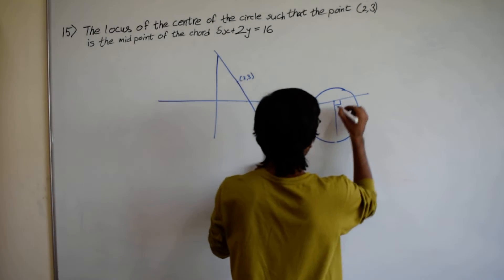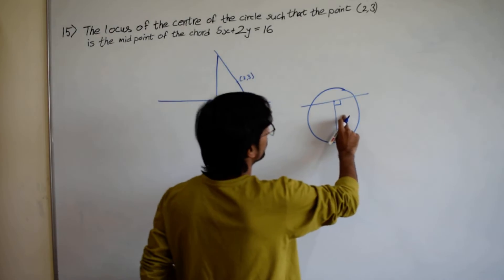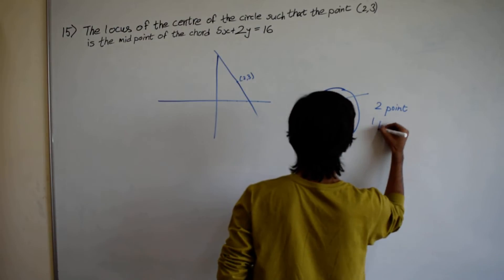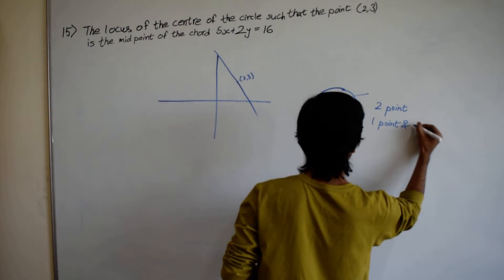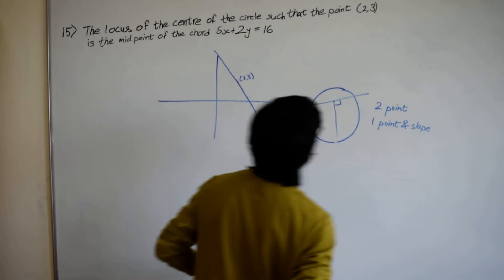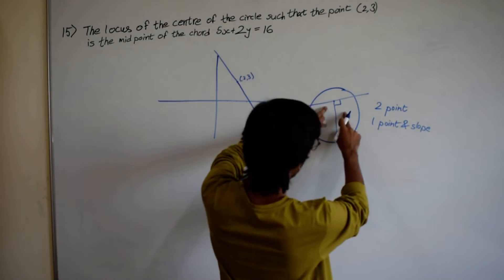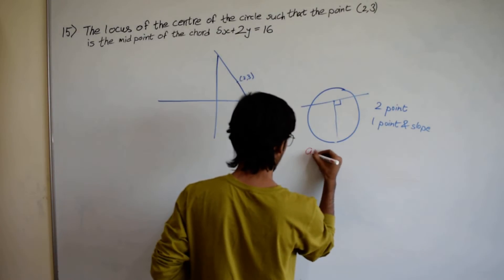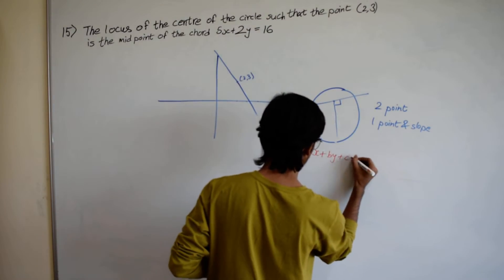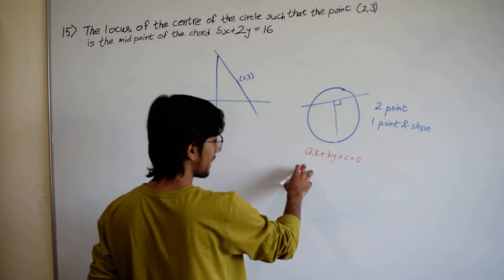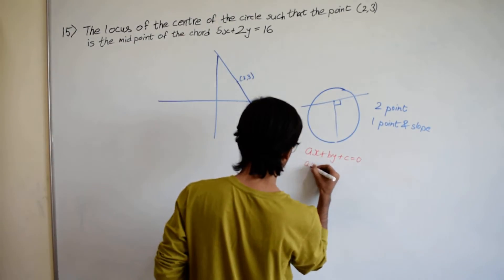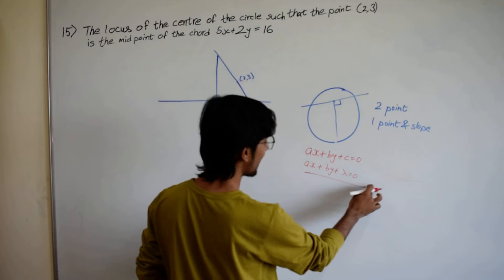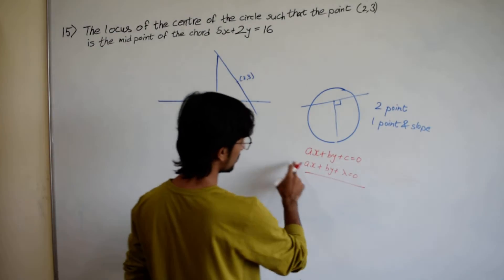How do we find this line? We need either two points, or one point and a slope. Let's review a concept: for a line ax plus by plus c equals 0, a line parallel to it would be ax plus by plus lambda equals 0.